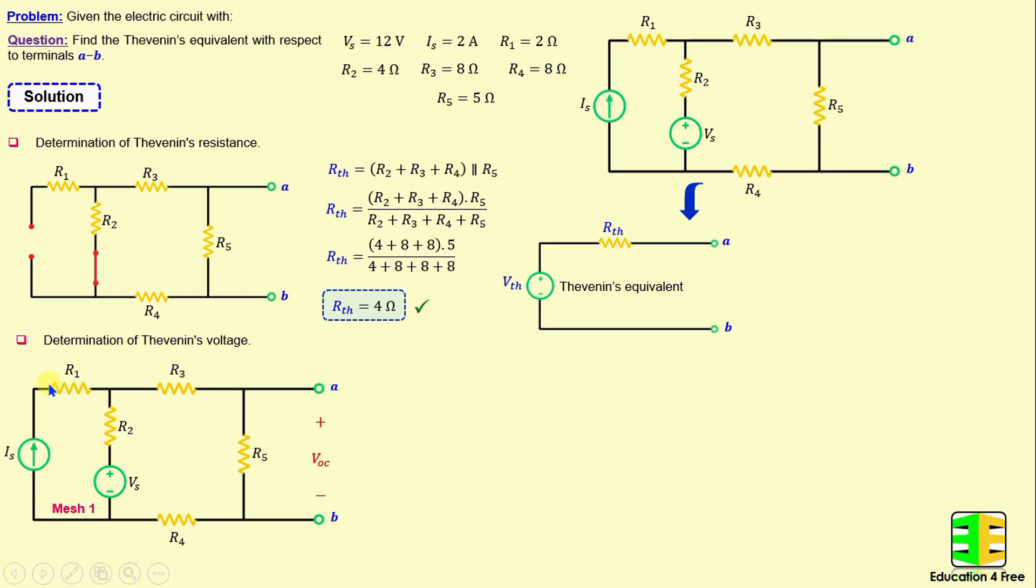Let's consider this is mesh number 1, and this is mesh number 2, and I will consider Ia is the current in mesh 1, and Ib is the current in mesh 2. In mesh 1, we can write Ia is equal to Is. That means Ia is equal to 2 amps.